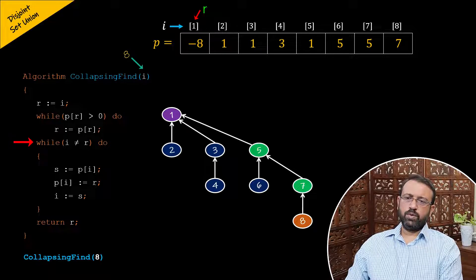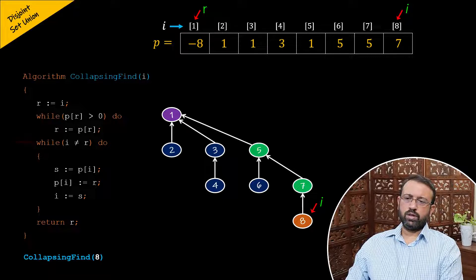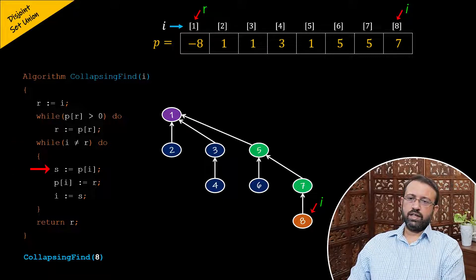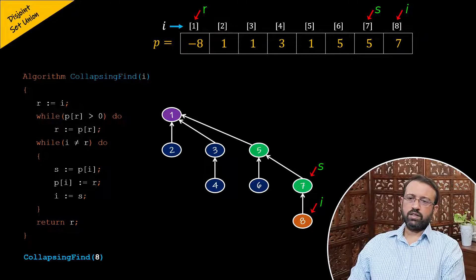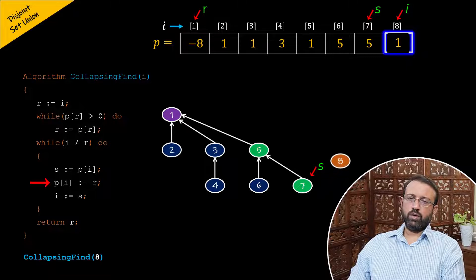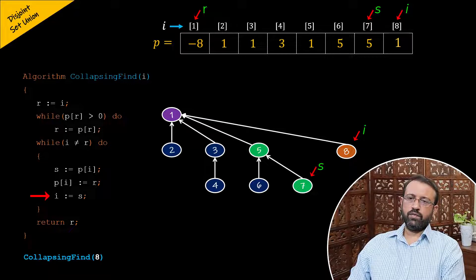Then we have the second while loop to perform the collapsing rule with condition i not equal to r. At this stage i is 8 and r is 1, so the condition is true and the loop executes. The statement s assigned p of i sets s to p of 8, which is 7. Then p of i, that is p of 8, is assigned r which is 1 — so the parent of node 8 becomes node 1, the root. Then i is assigned s, so i becomes 7.